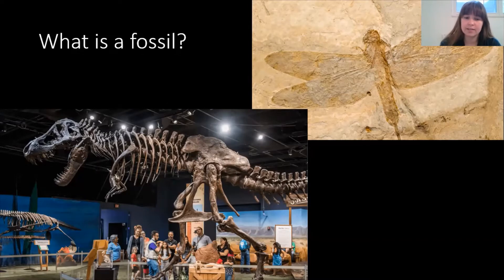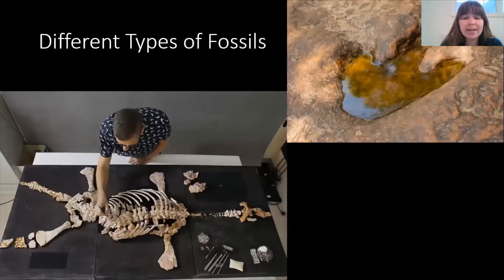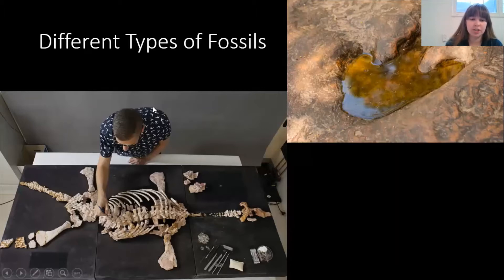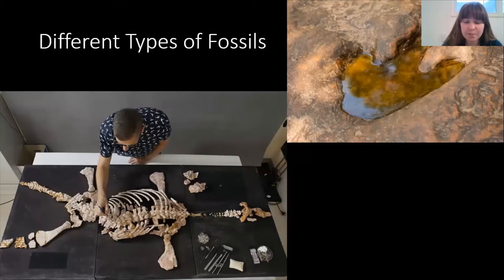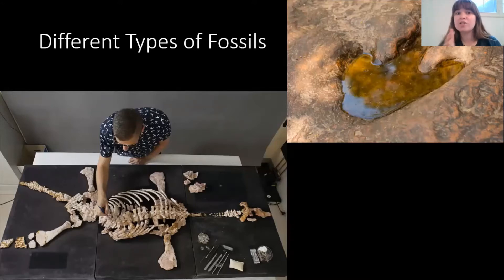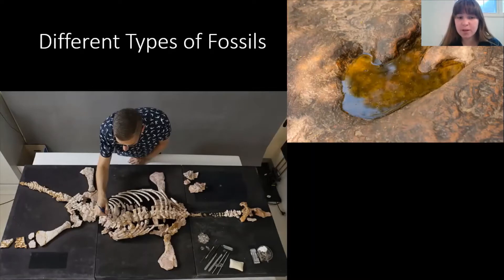There are two main different types of fossils: body fossils and trace fossils. Body fossils are like what you see in this picture here — they are fossils that come directly from the body of the animal or plant that has been fossilized. That means bones, teeth, stems if you find a fossilized plant, or a shell from some animal that lived a long long time ago.